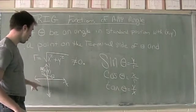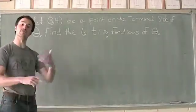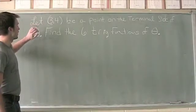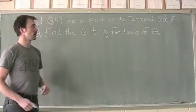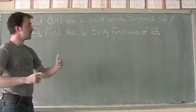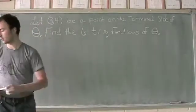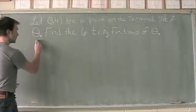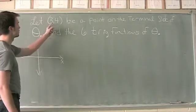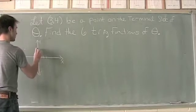Now we're going to look at evaluating trig functions at a specific point. The problem says: let (3, 4) be a point on the terminal side of theta — find the six trig functions of theta. When a point is given we assume we are in standard position. Here on the Cartesian plane I have the point (3, 4), so I go one, two, three to the right and up one, two, three, four.